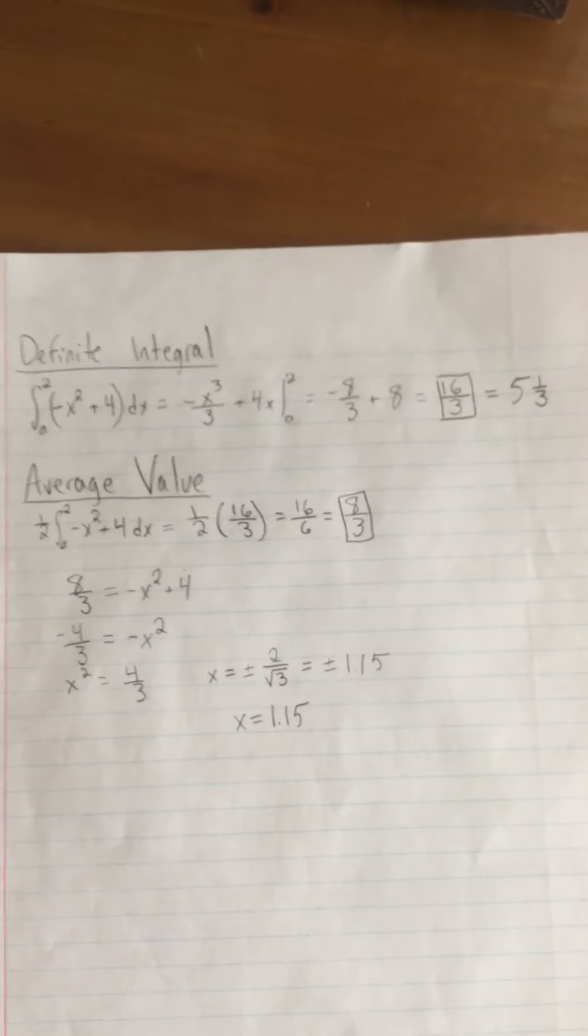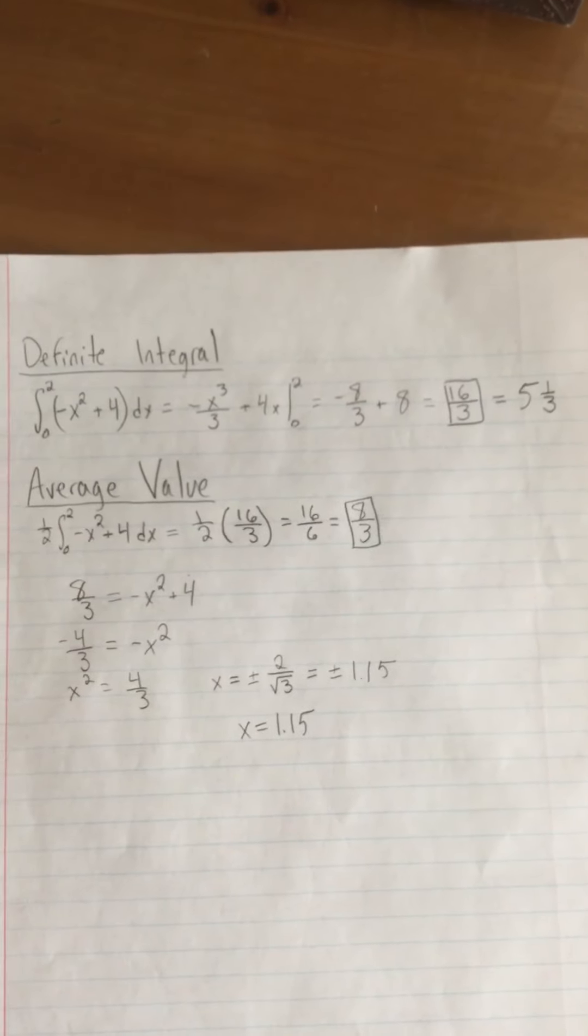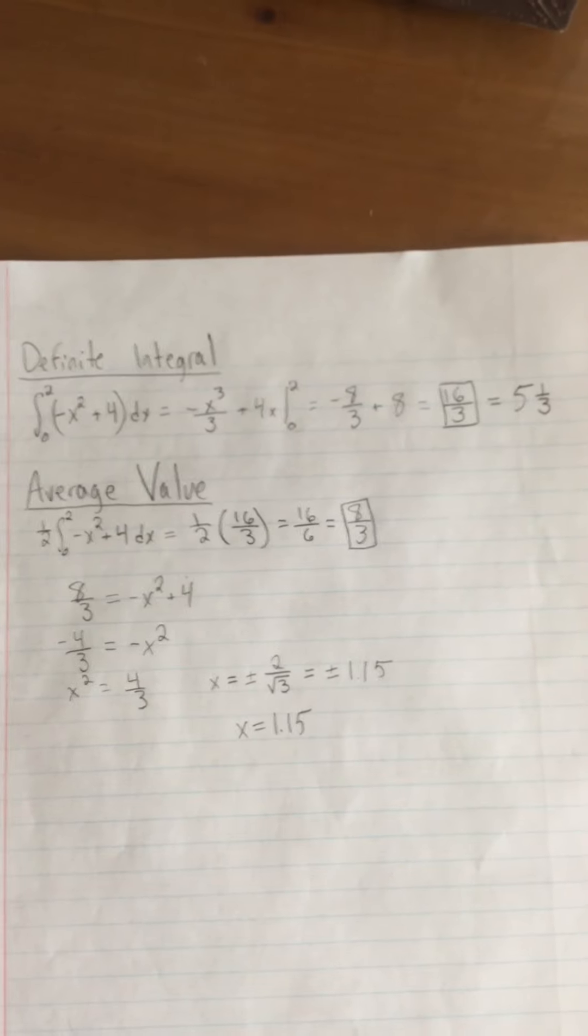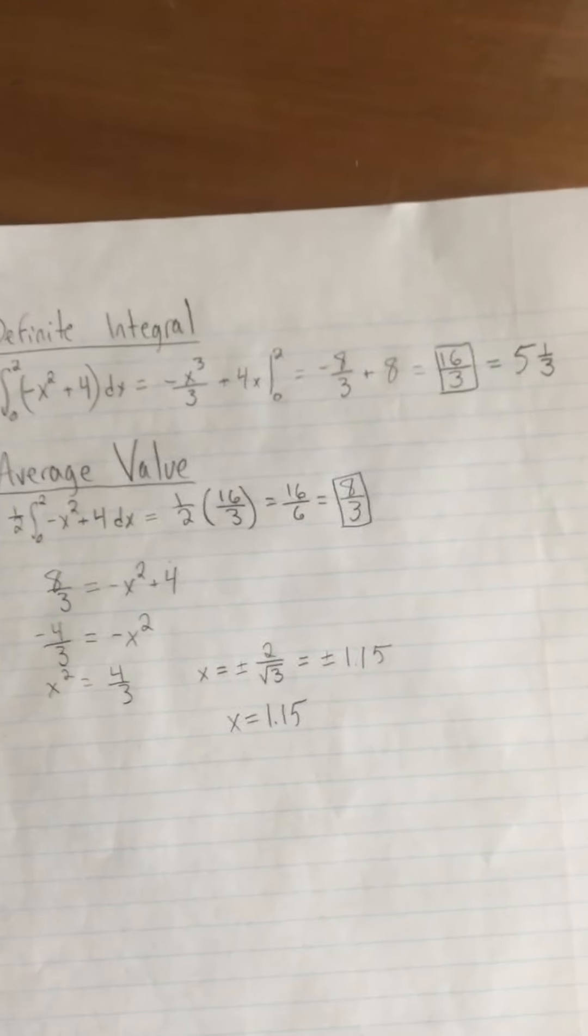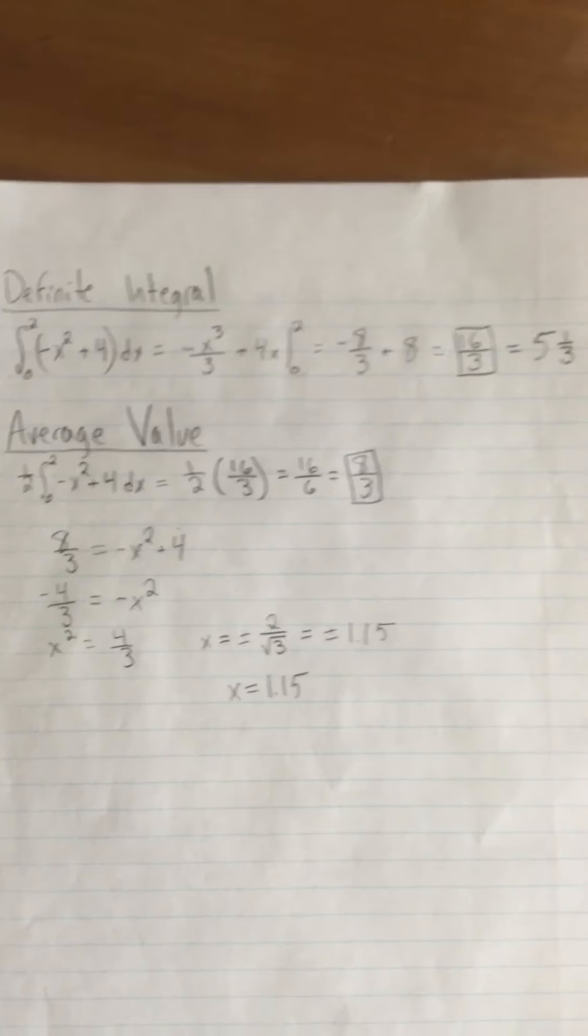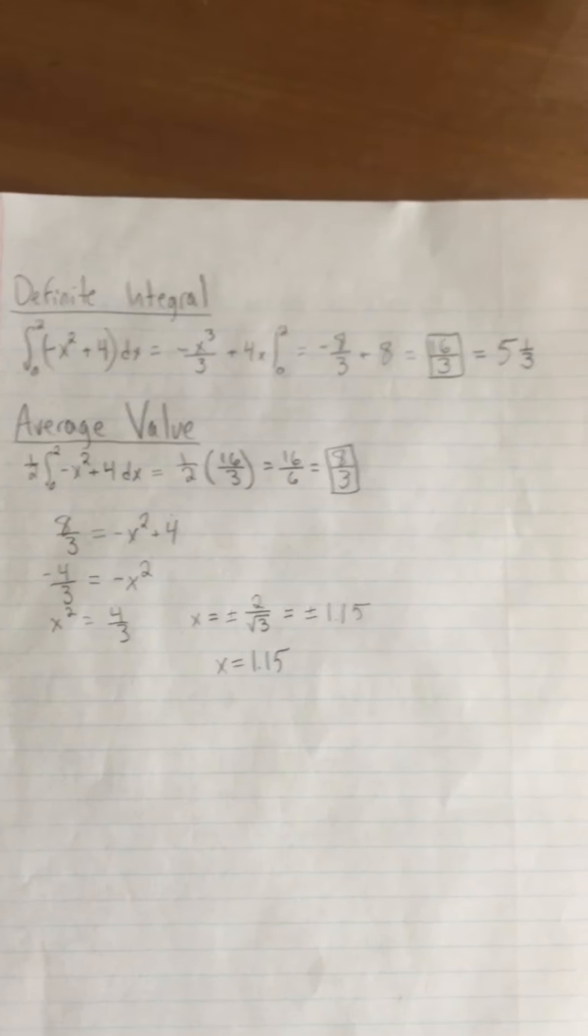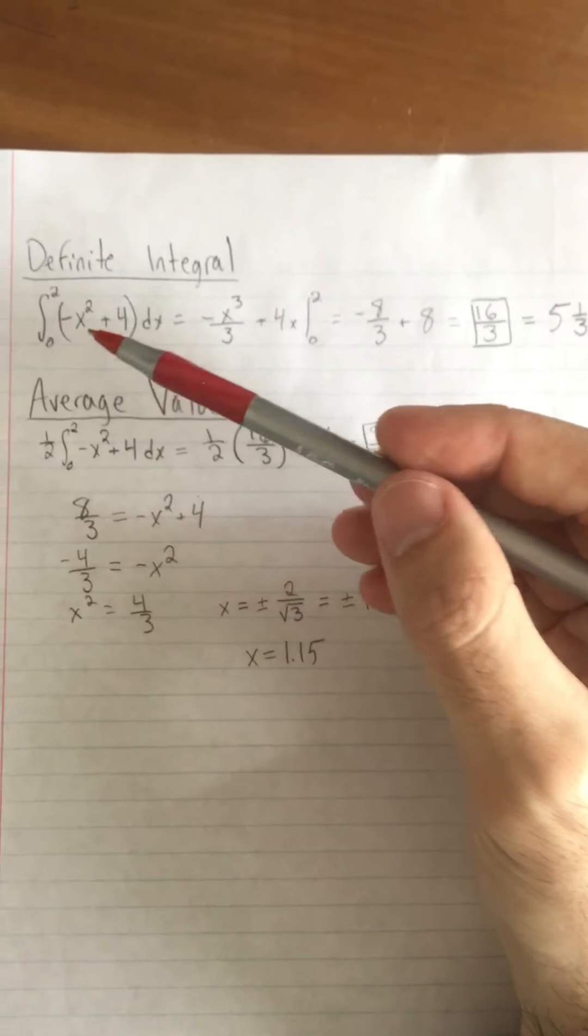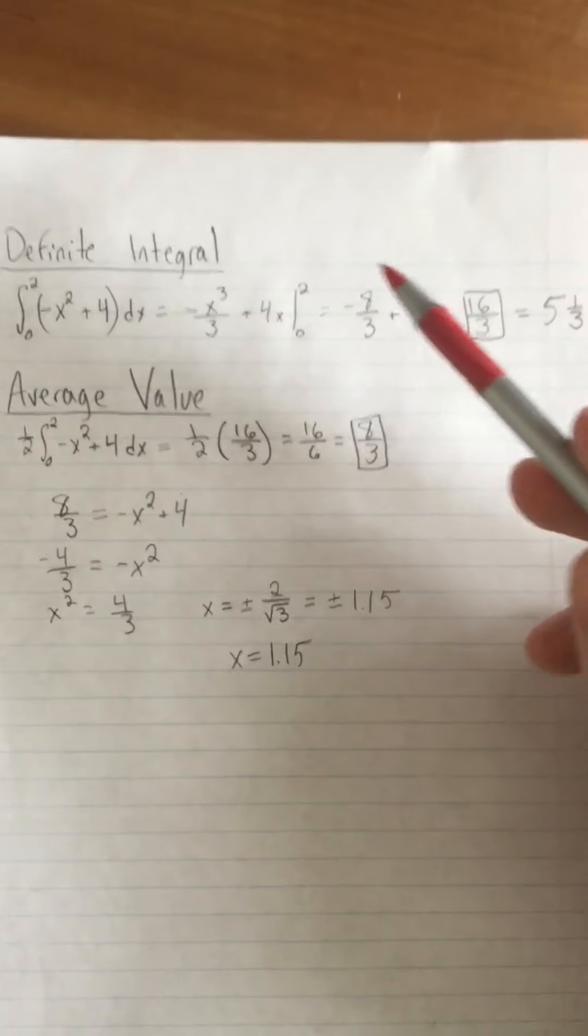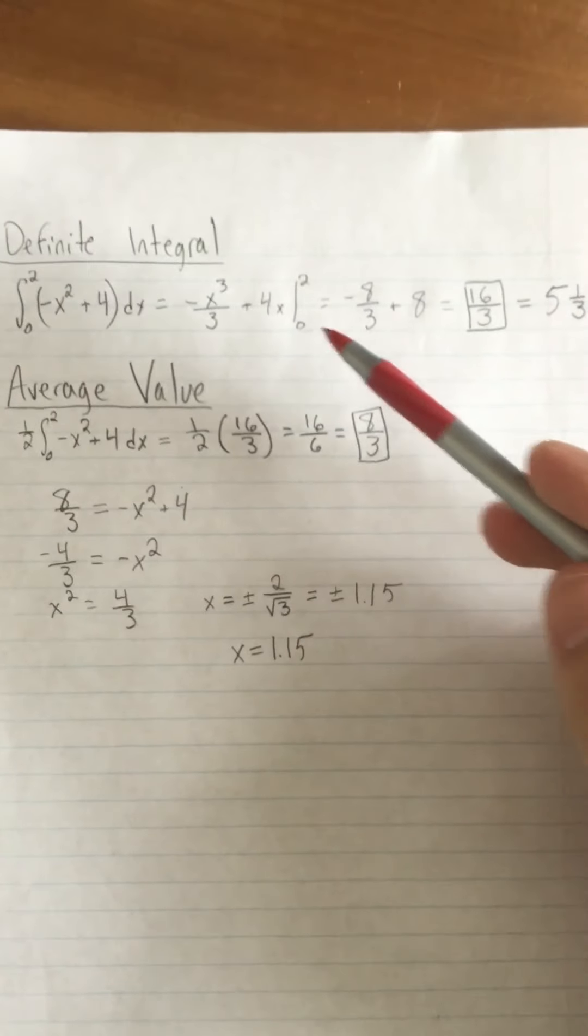With this definite integral, okay this is the new stuff that we've been doing, when we do this definite integral we should get the same value, which we did get here, by using that fundamental theorem of calculus. Doing the anti-derivative and then plugging in the upper limit minus the lower limit. Really all I did here was plug in the upper limit because if I plugged in zero it would just be zero.